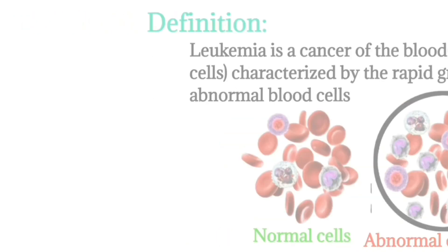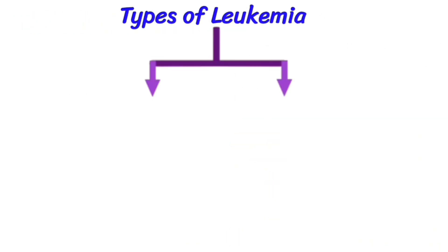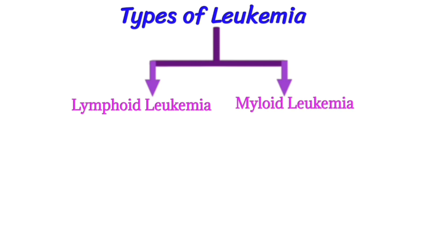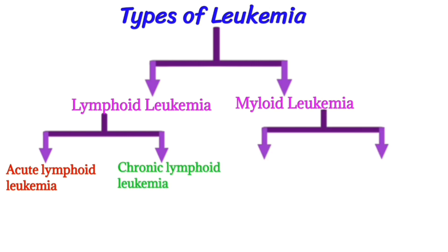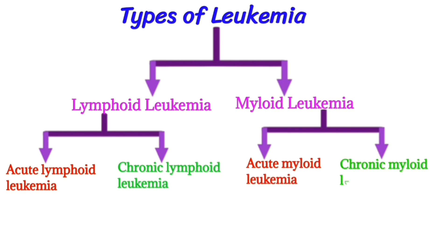Types of leukemia: there are two types — lymphoid leukemia and myeloid leukemia. Lymphoid leukemia is further divided into acute lymphoid leukemia and chronic lymphoid leukemia. Myeloid leukemia is further divided into acute myeloid leukemia and chronic myeloid leukemia.